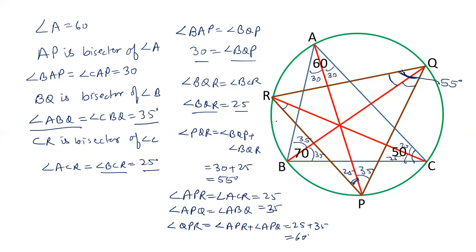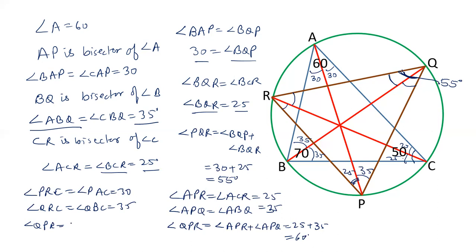Now for angle R: angle PRC is equal to angle PAC, which is 30 degrees, and angle CRQ is equal to angle CBQ, which is 35 degrees. Therefore angle QRP equals PRC plus CRQ, that is 30 plus 35, which equals 65 degrees.